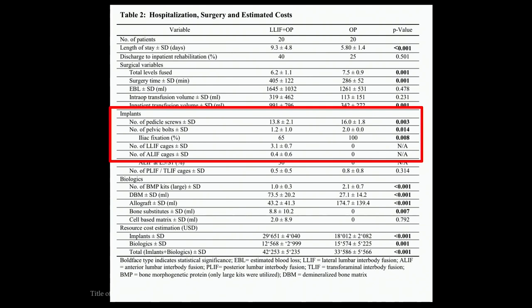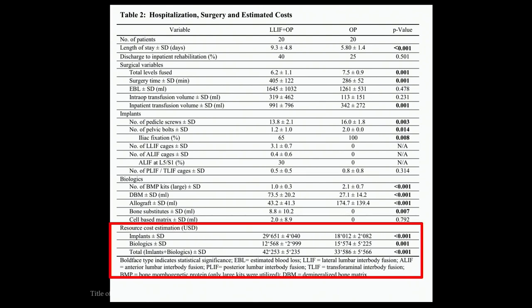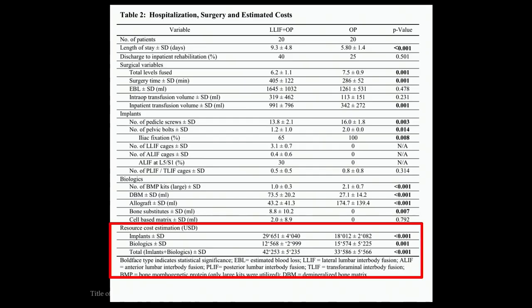Looking at implant use, more pedicle screws were used in the all-open group because of more levels fused, more pelvic bolts likely because there's no interbody at L5-S1, but no lateral interbody cages versus three in the combined approach. For biologics, more BMP was used in the all-open posterior group, but more DBM in the combined groups. Combining implant costs and biologics only — not including length of stay — you spend about 30% more with the lateral approach.